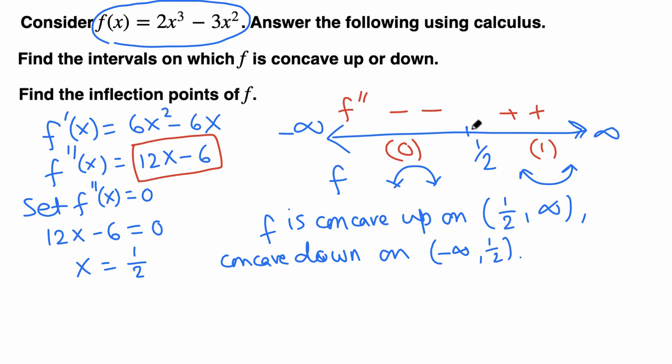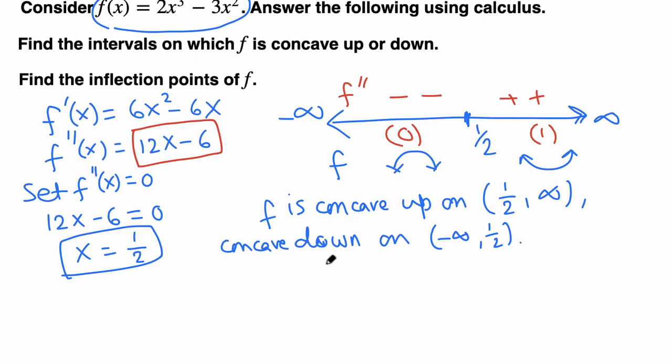To find the inflection points of f, we have one candidate at x = 1/2. At 1/2, to the left we have concave downward and to the right concave upward. Since the concavity changes, this is an inflection point. We need to find the x-coordinate and corresponding y-coordinate.